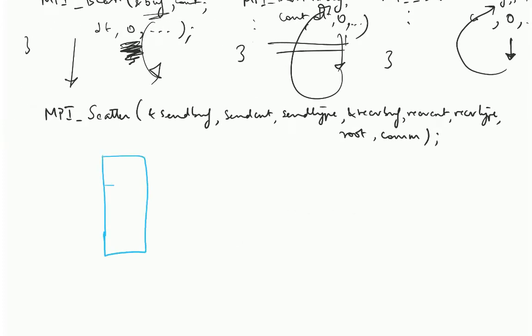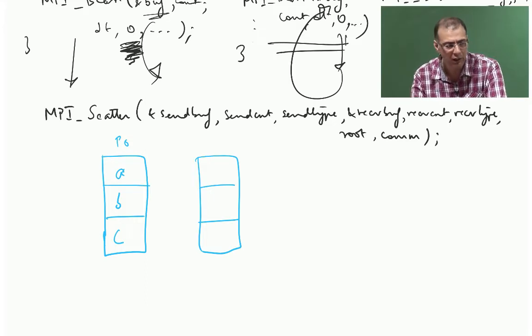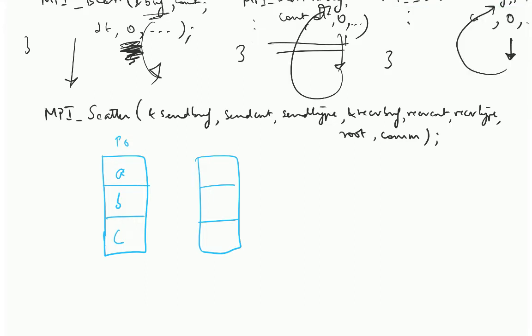Let's say that you have data A, B, C on processor 0. In most of the examples, I typically end up taking rank 0 as the root but any rank can be the root. So do not assume that it is only processor 0 which can be the root.